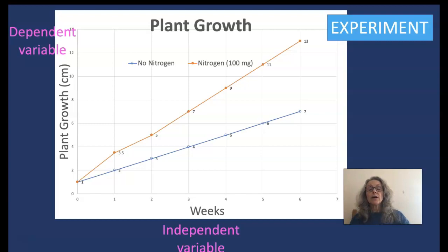From this data, I will draw a set of conclusions. I conclude that plants grow better in the presence of nitrogen. And notice that I have plotted the dependent variable on the y-axis and the independent variable on the x-axis. That is standard.